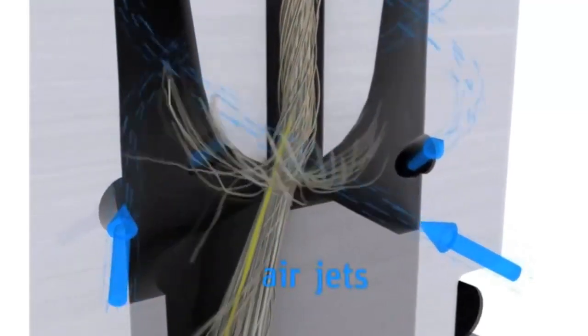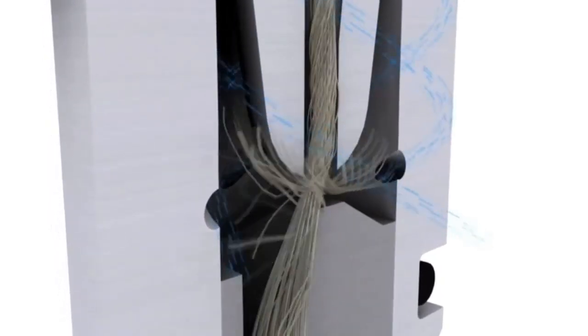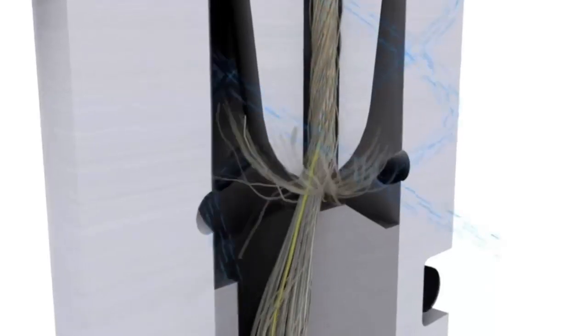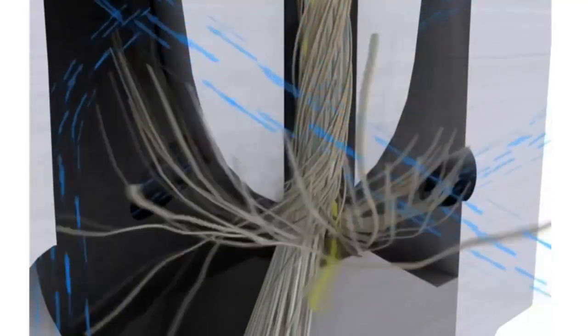The four airjets in the twist element create a whirlwind around the spinning tip by means of pressured air. The air drifts the loose fiber ends around the spinning tip. With the spinning speed, the wrapped fiber ends are pulled inside the tube and twisted around the yarn core.